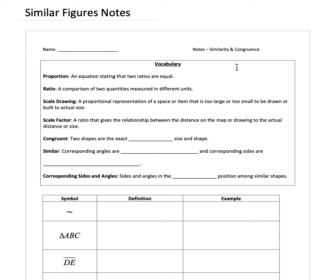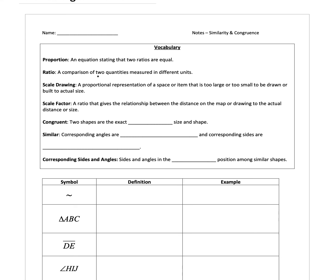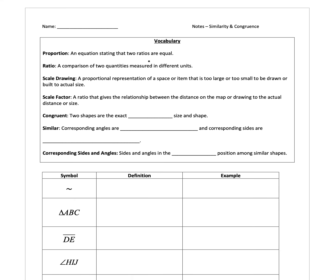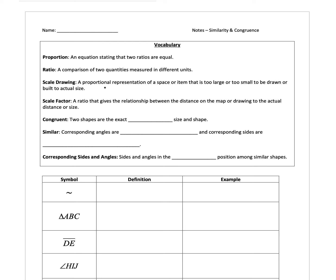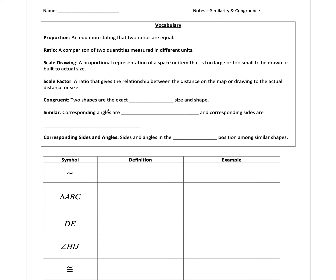In today's video we're going to be talking about similar figures and we'll be using proportions just like we were in our last unit. We have some vocab that's repeated again: proportion, which is an equation stating two ratios are equal; ratio, a comparison of two quantities measured in different units; a scale drawing, a proportional representation of a space or item too large or small to be drawn to actual size; and scale factor, a ratio giving the relationship between the distance on a map or drawing to the actual distance or size.